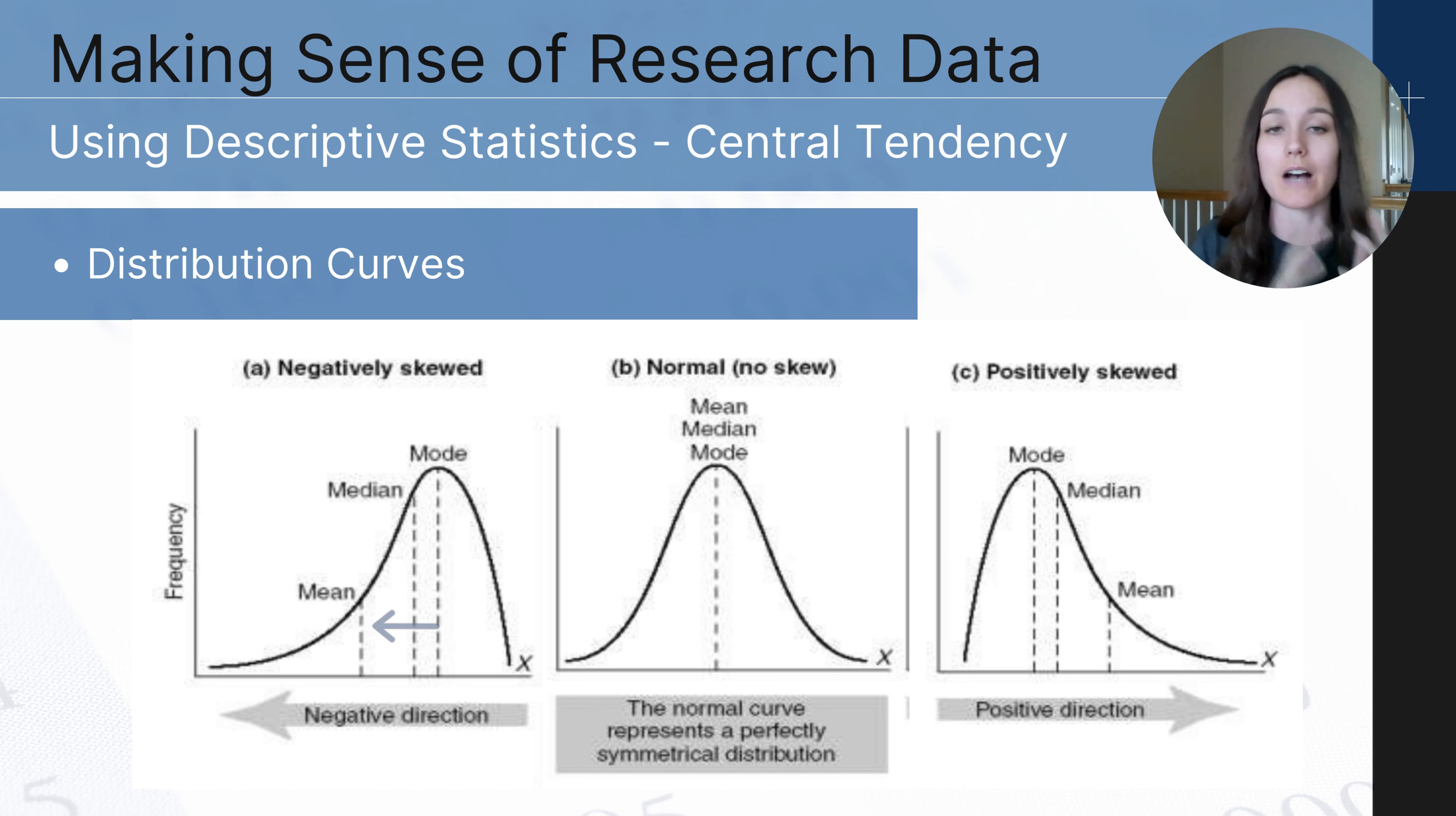And this is a negative distribution and I remember that because the tail that you can see is where those outliers are, the tail almost appears to be pointing left on a number line which is negative. And so I remember a negative skew makes that point. You've got some outliers out there that are really low that are pulling the average down.